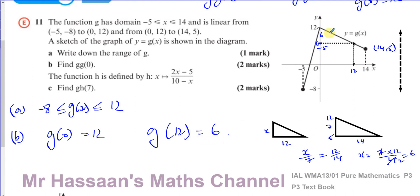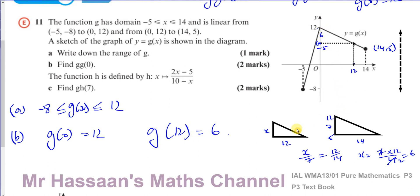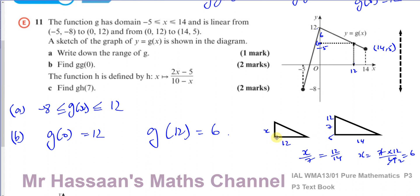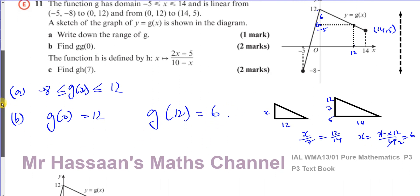To summarize: the big triangle goes from y=5 to y=12 over x=0 to x=14 (height 7, width 14). The small triangle at x=12 has width 12 and height 6, giving g(12) = 12 - 6 = 6. That's the answer to part (b).